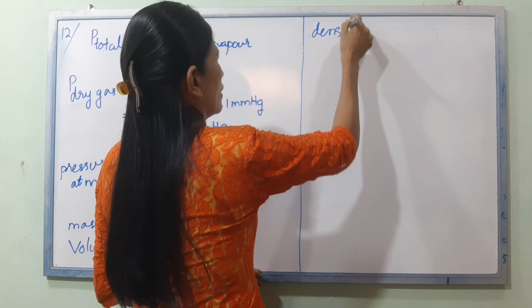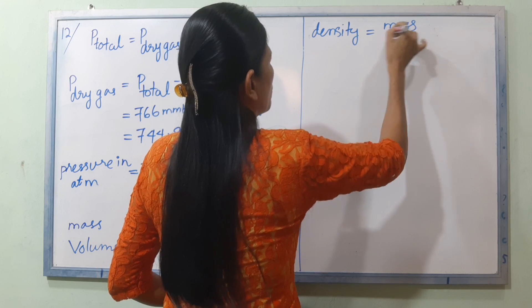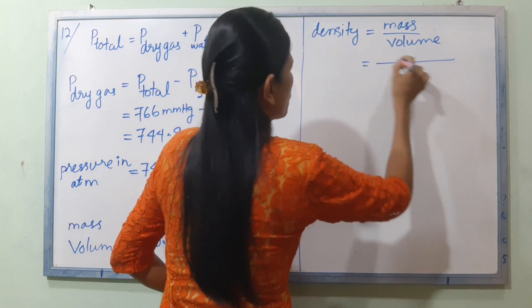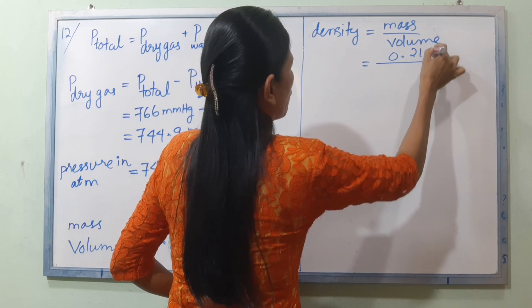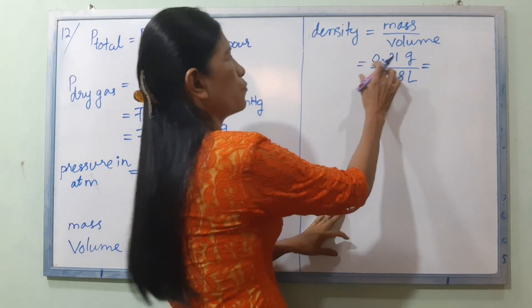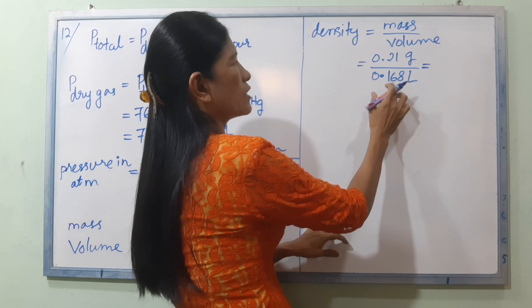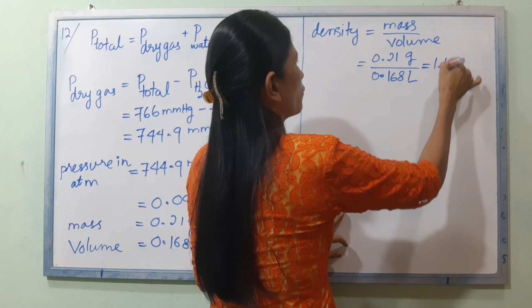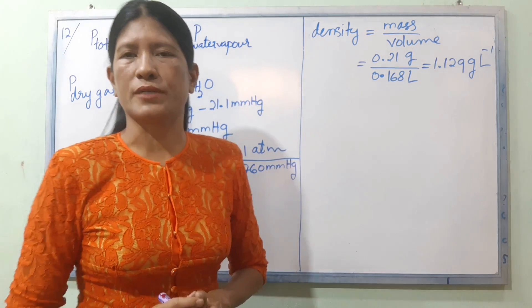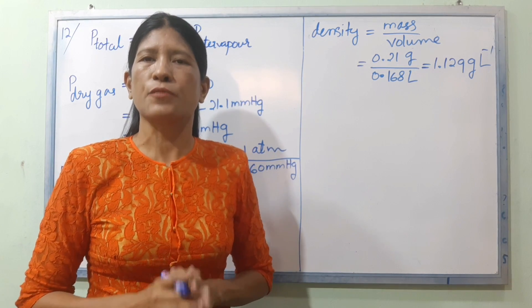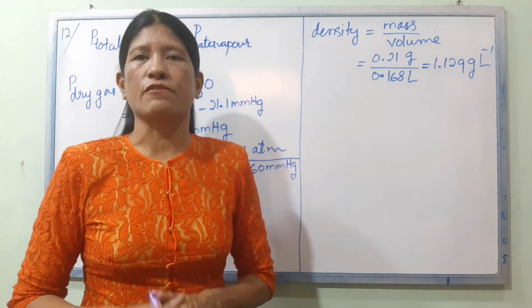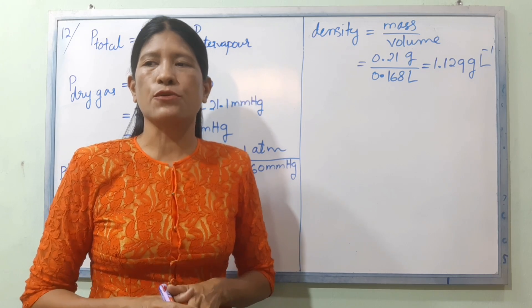0.21 gram divided by 0.168 liter gives a density of 1.129 gram per liter.